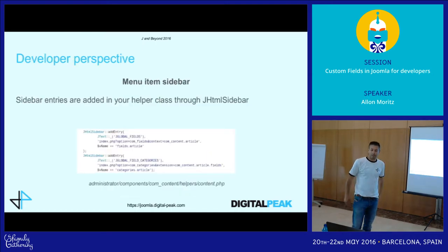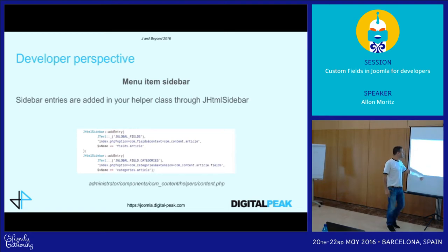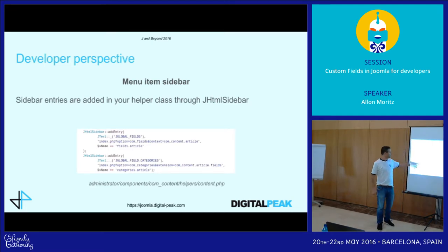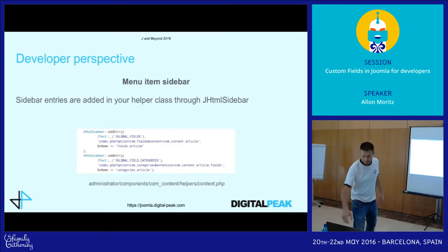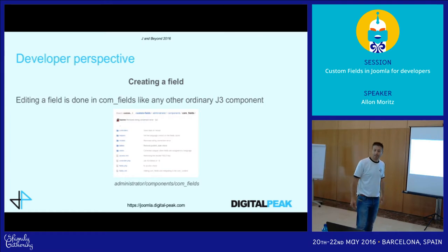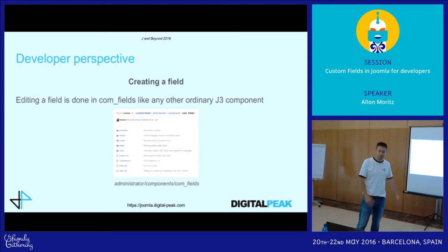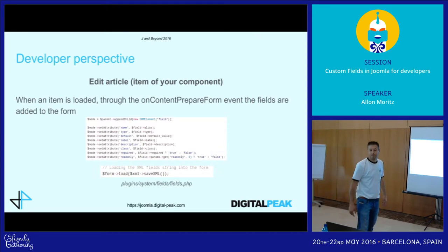As a developer, it starts with the sidebar, where you add menu items for com_fields. The important thing is the context — similar to what we have in categories where it's called 'extension.' Fields can also be grouped into categories; by default the tab 'Fields' is shown, but if you add a field to a field group, the name of the field group is shown. Creating a field is nothing special — it's like any ordinary Joomla 3 component with models, views, and a table. When the user hits Save, it gets stored to the database.